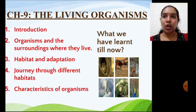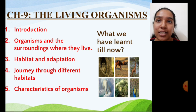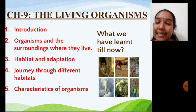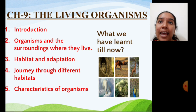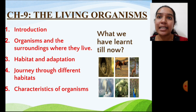Before we begin, let's recall what we have learned till now. We learned about different living beings and the places where they live and grow, which is called habitat. We learned different types of habitats and some adaptations seen in plants and animals to survive in a particular habitat. We explored habitats like deserts, mountain regions, grasslands, oceans, ponds, and lakes, and saw the types of plants and animals that grow there.